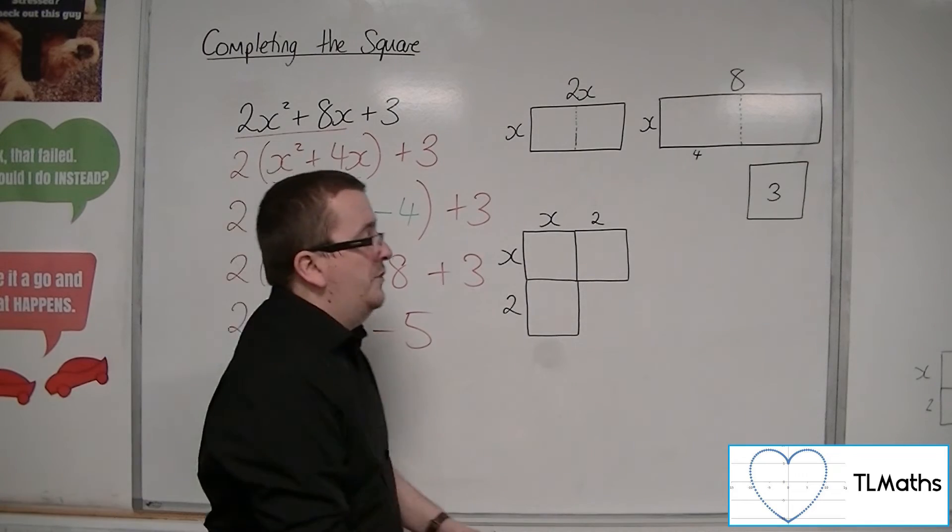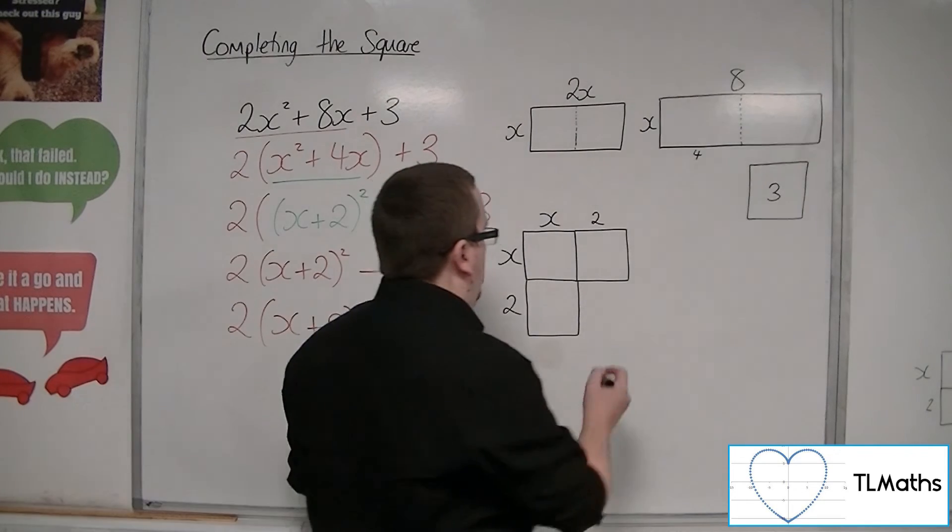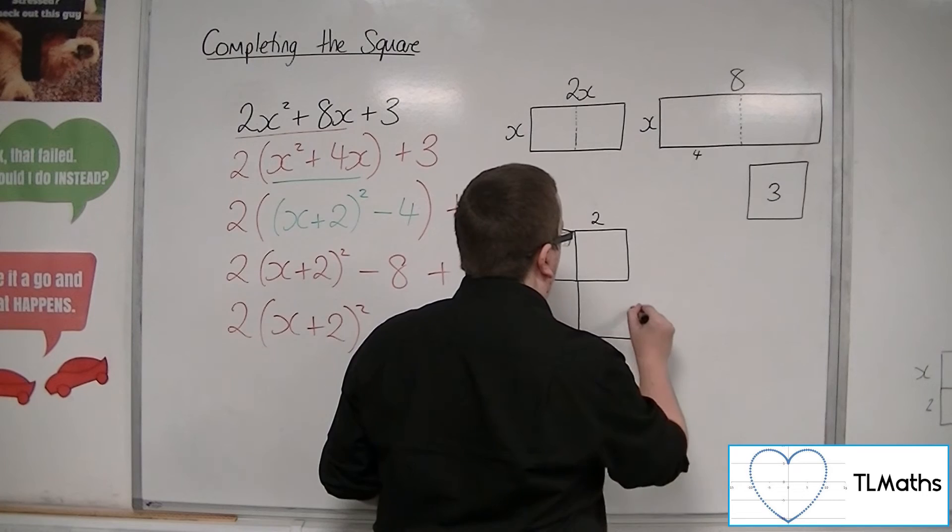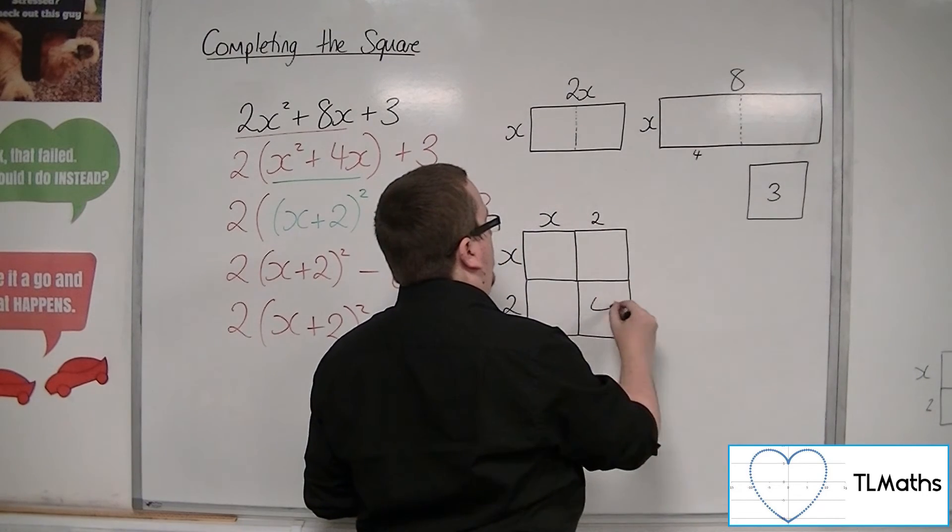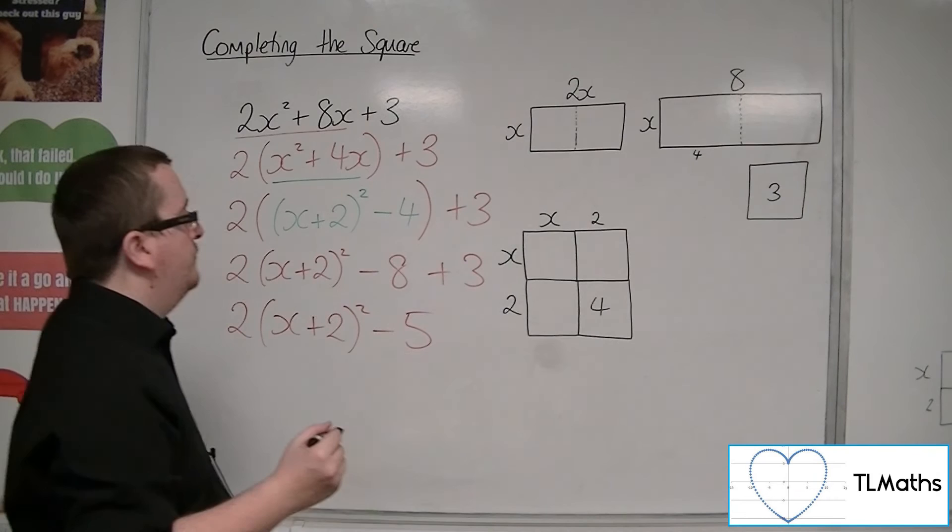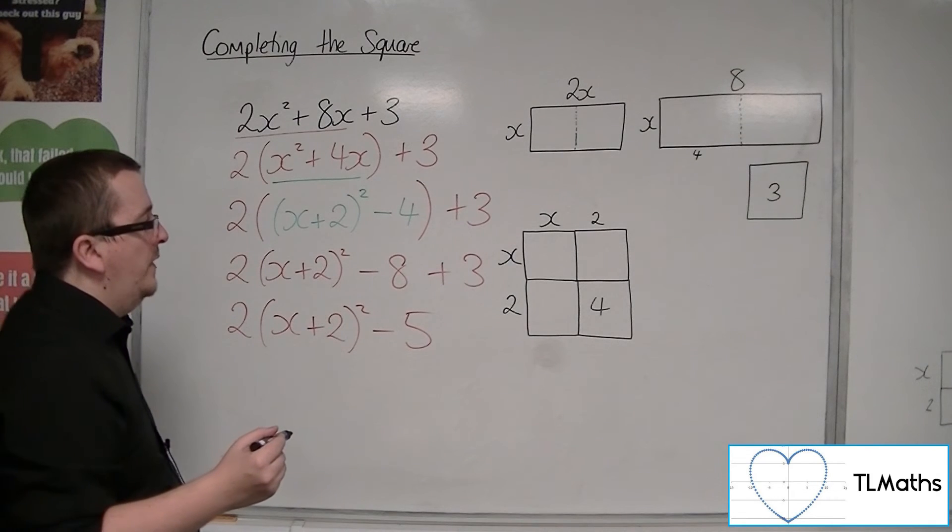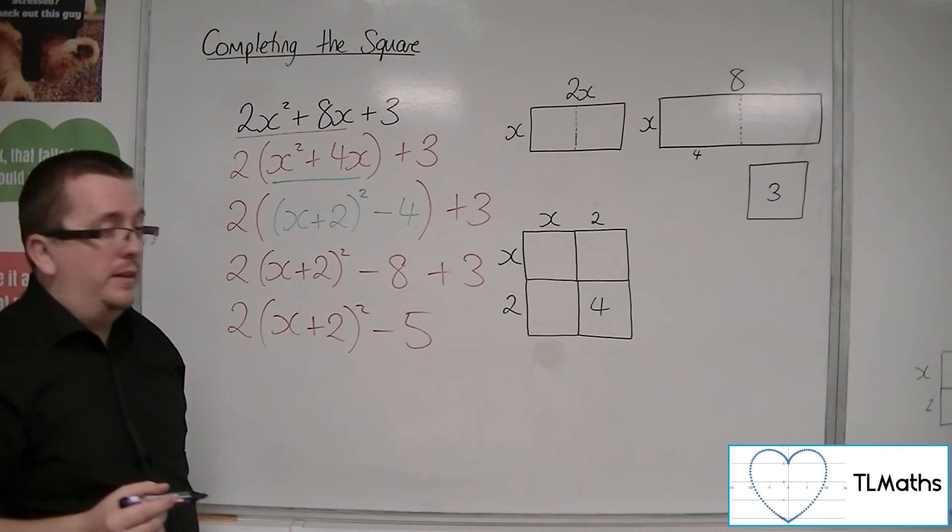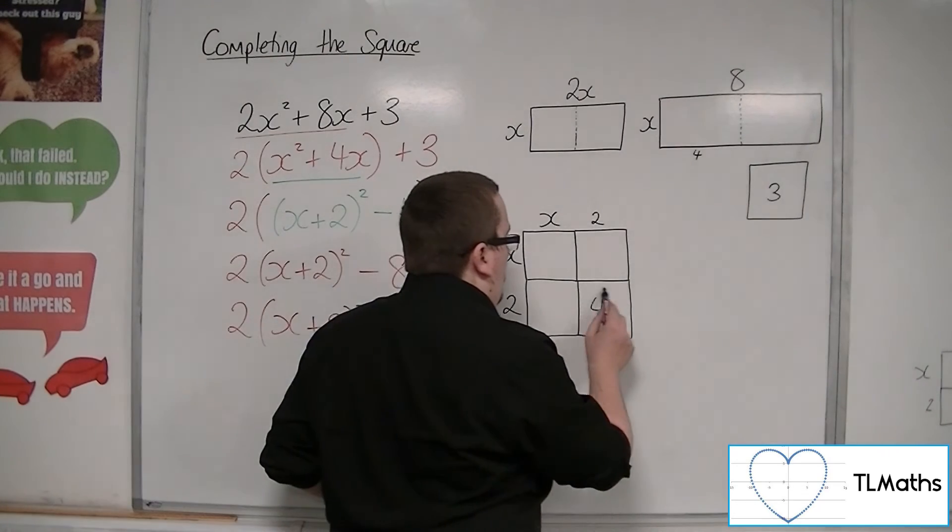And to complete the square, I've got this 2 times 2, so this 4. That's the bit that I am missing. So this is the bit that I'm missing here.